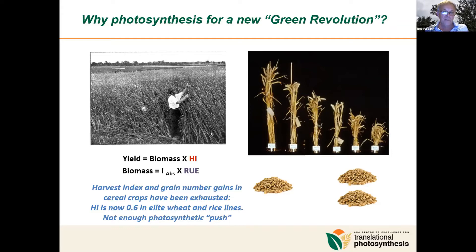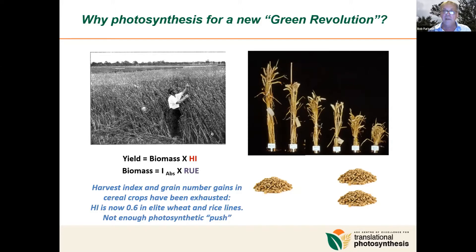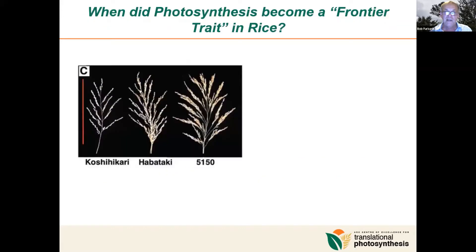In many of these elite rice and wheat lines, harvest index or the genetic potential for harvest index is close to 0.6, which is the theoretical maximum for both wheat and rice. More recently, wheat breeders are finding there's not enough photosynthetic push to fill the available grain, particularly with the challenges of climate change, drought and heat. In rice, that realisation came about quite some time ago, and photosynthesis became a lead trait in rice breeding.